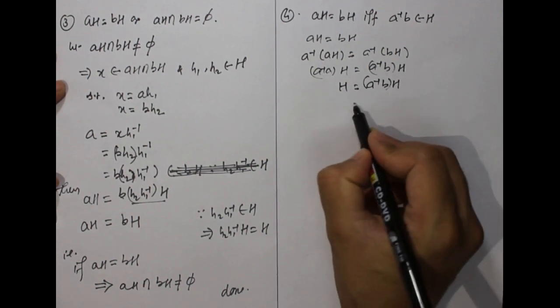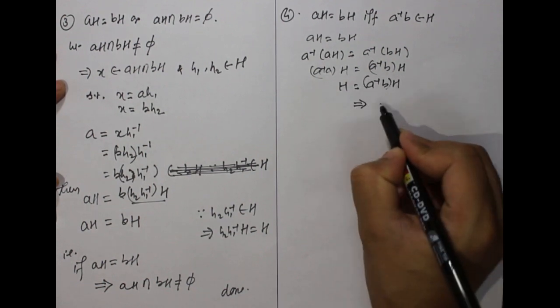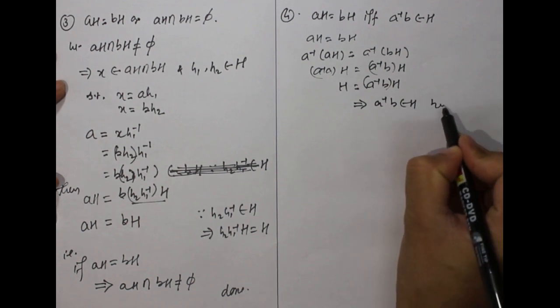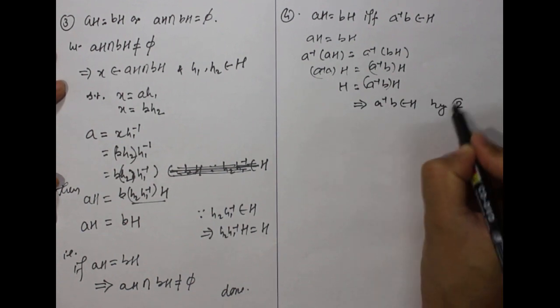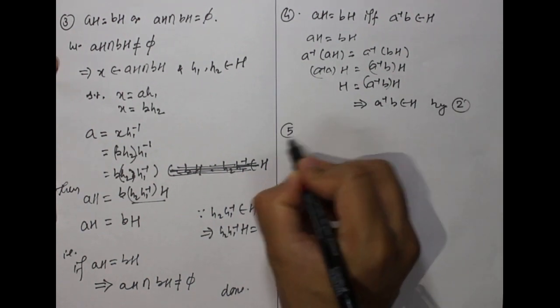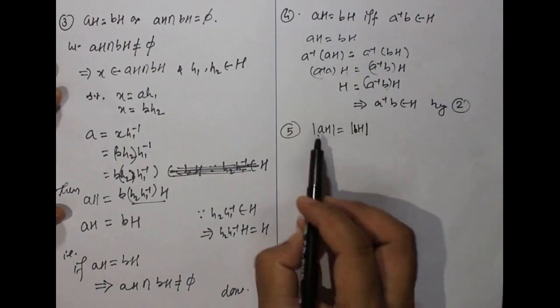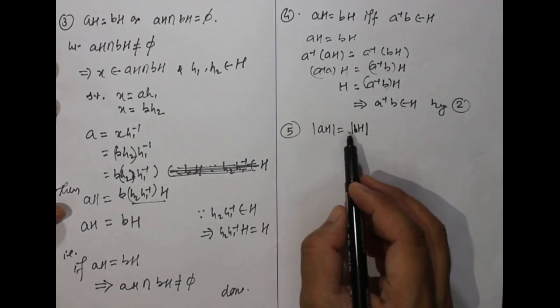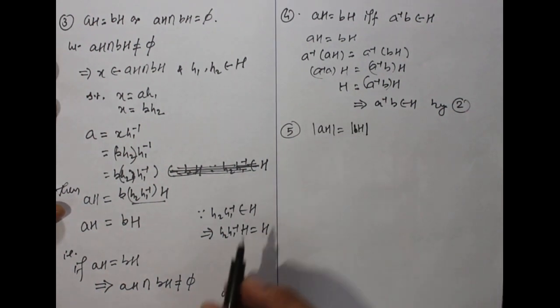Property 4: aH equals bH if and only if a⁻¹b belongs to H. Operating a⁻¹ on both sides from the left: a⁻¹aH = a⁻¹bH, which gives eH = a⁻¹bH, so H = a⁻¹bH. This implies a⁻¹b belongs to H by property 2.